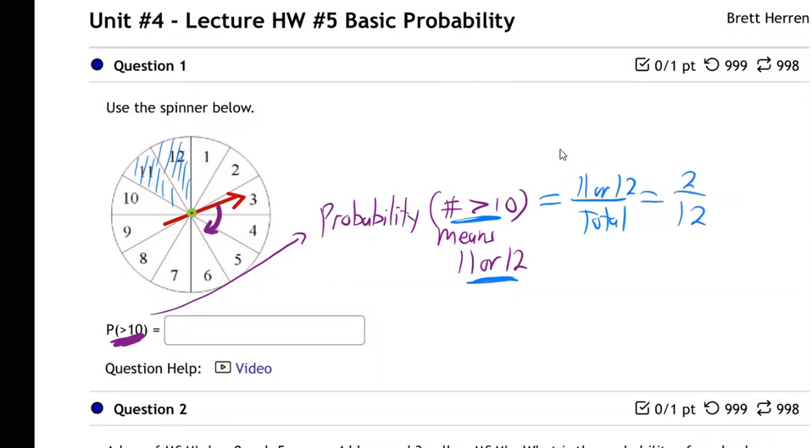So probability is always the ones you want - you want it to land in regions 11 or 12 over the total. So two regions out of 12. Now you can give the answer like a fraction or a decimal.